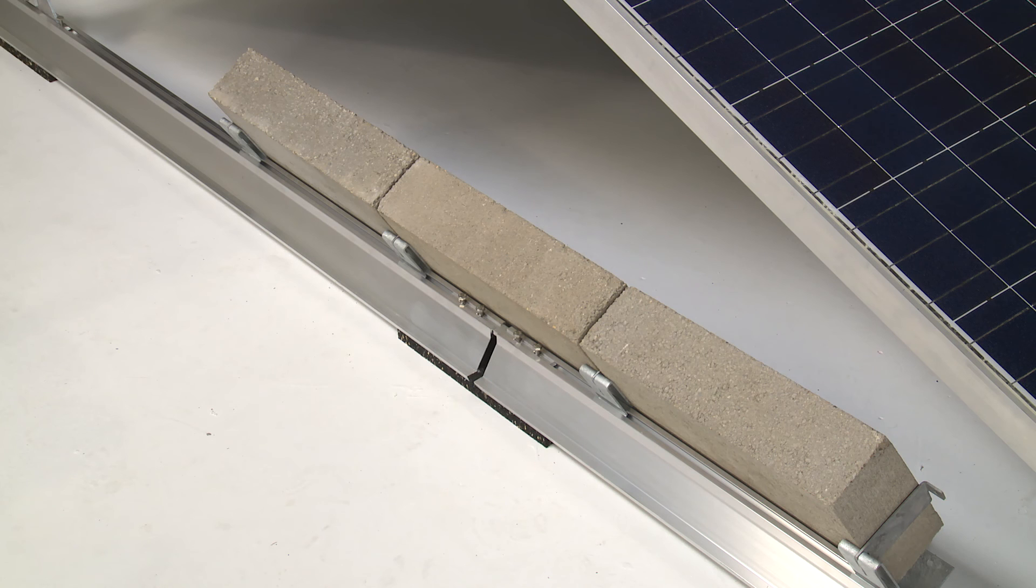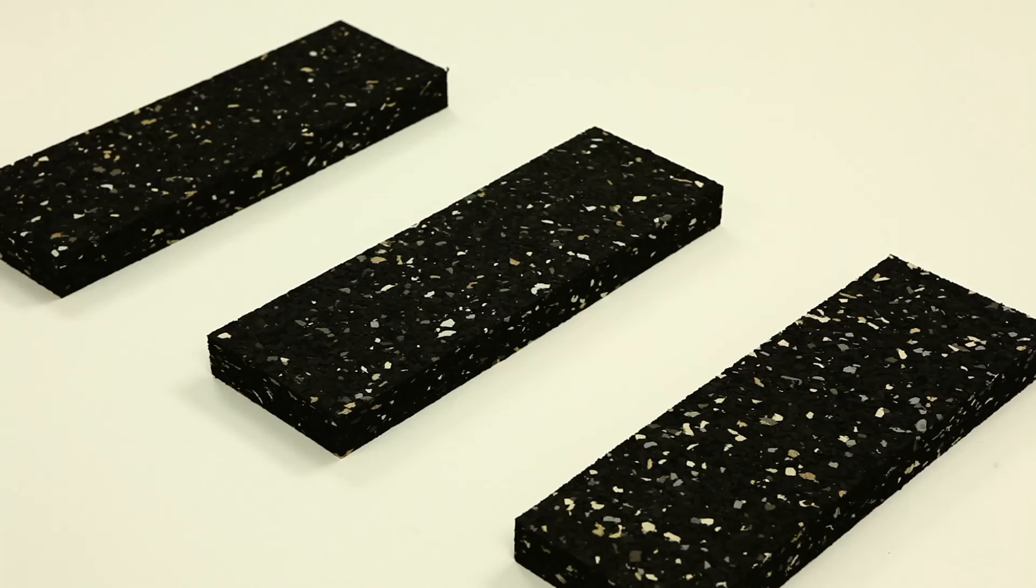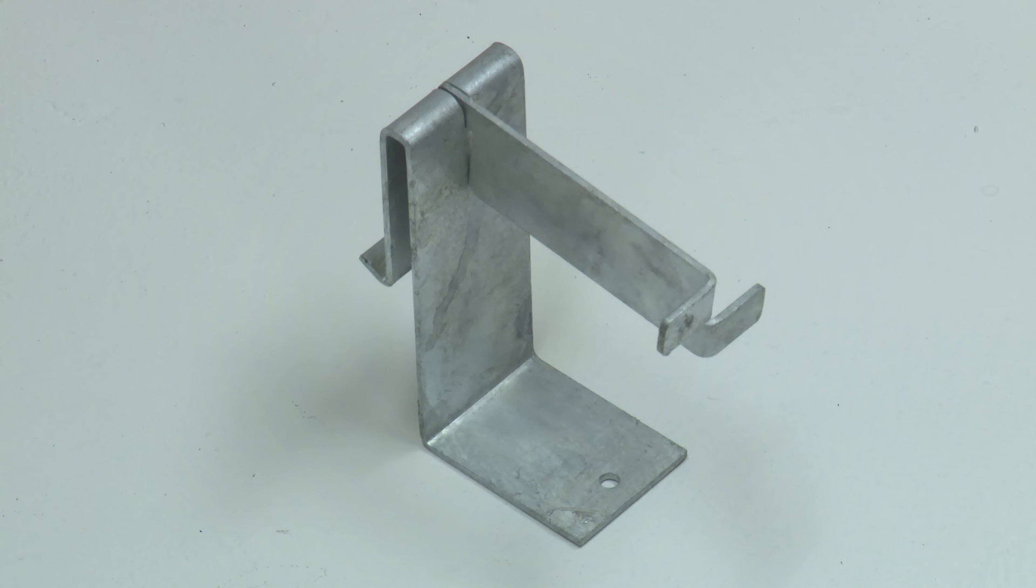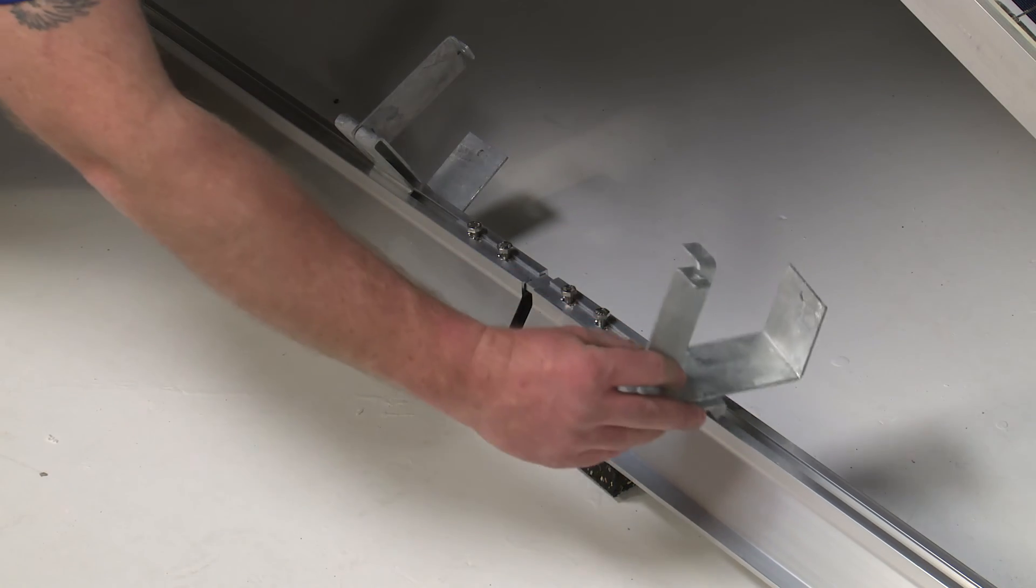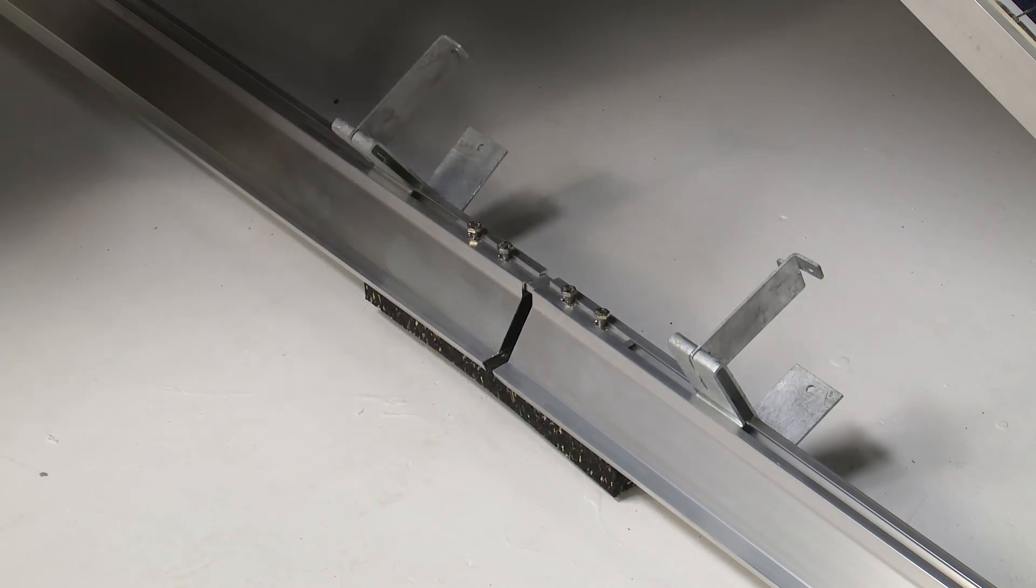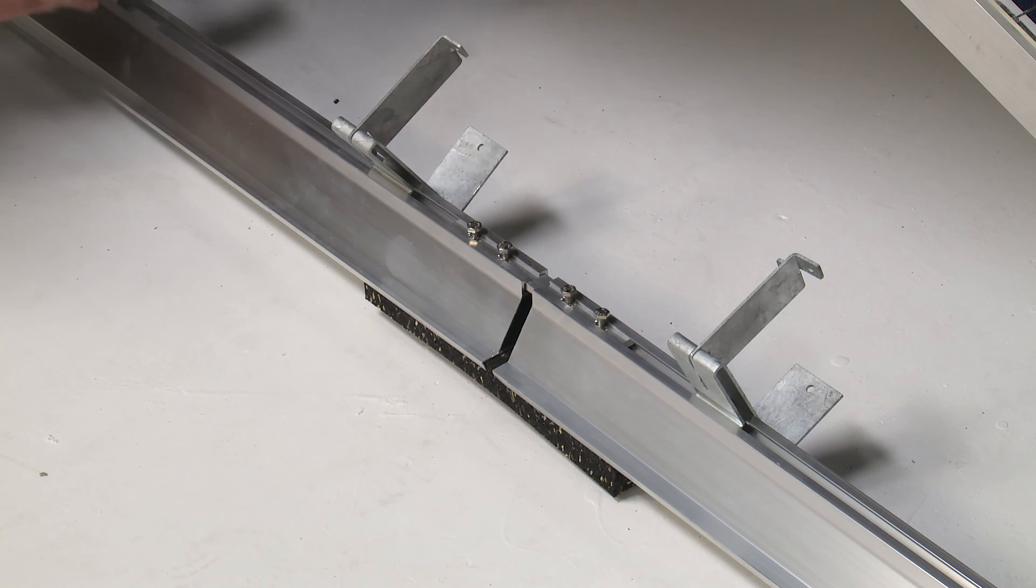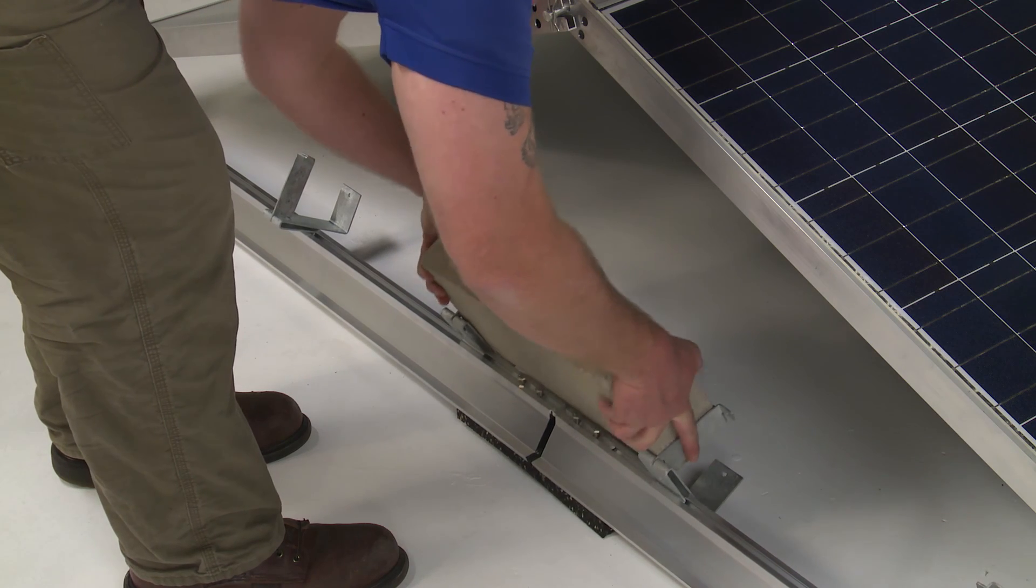Determine the required quantity and location of ballast. Verify that additional rail pads have been installed under the ballast locations. Ballast is added to the system using ballast hooks and clips. Install a ballast hook and clip where one end of the ballast block will go and add another where the other end will go. Lay the block into the ballast hooks.